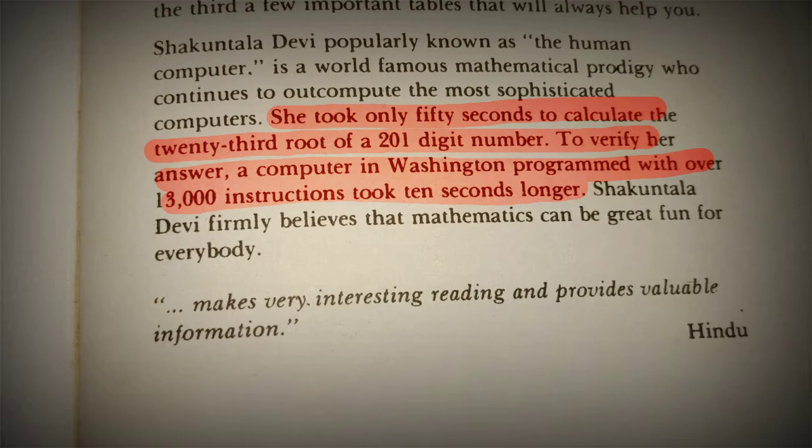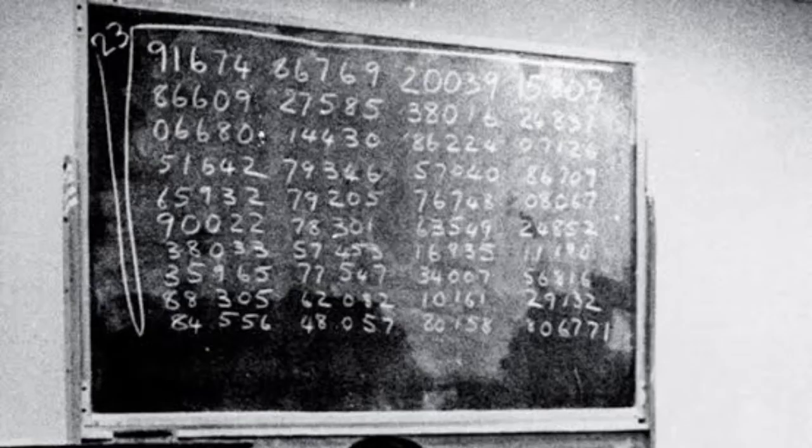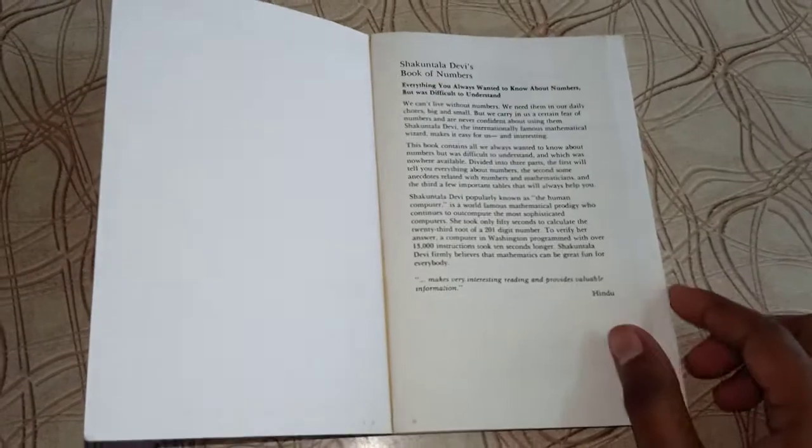And to verify her answer, they used a computer with 13,000 instructions and the computer took 10 seconds longer than what she gave. She took 50 seconds and the computer got 60 seconds. In the photo you can see this number - she found the 23rd root in just 50 seconds. Such arguments like this are given in the book.